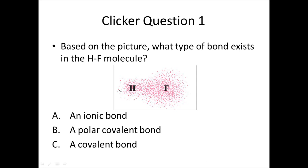This is a depiction of a polar covalent bond. This is trying to show you that there's more electron density around this fluorine than there is around this hydrogen — hopefully showing you the bonding electrons — demonstrating that there's more electron density around this fluorine.